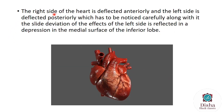The right side of the heart is deflected anteriorly and the left side is deflected posteriorly, which has to be noticed carefully. Along with this, the slight deviation of the left side is deflected into a depression in the medial surface of the inferior lobe. Here we can see that the anterior side is somewhat upper and the lower side has a depression that is downward or inward, and we can see the surface of the inferior lobe.